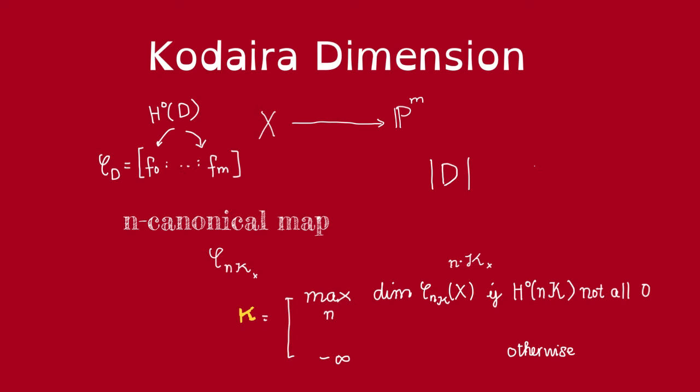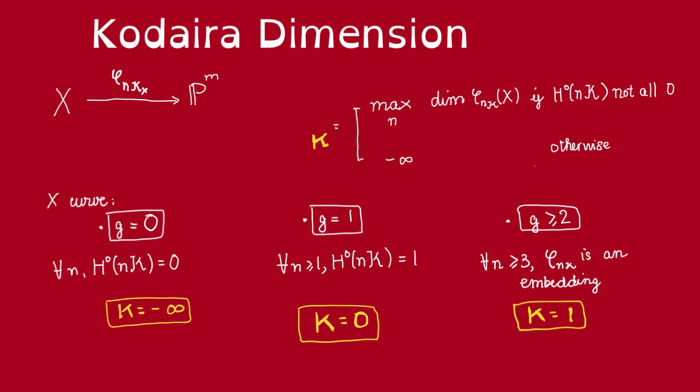Let's illustrate this in the example of curves. So, a curve has a natural invariant, the genus. We are going to compute the Kodaira dimension of the curve based on the genus.